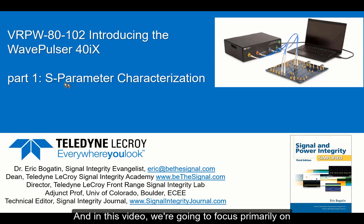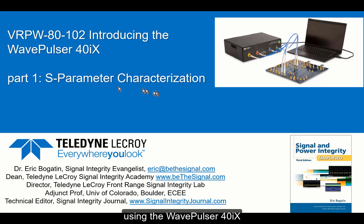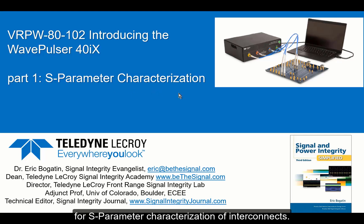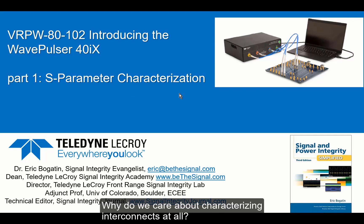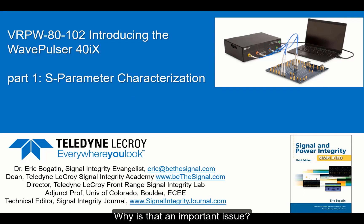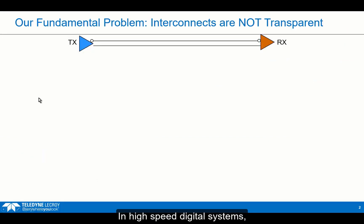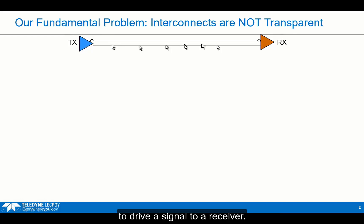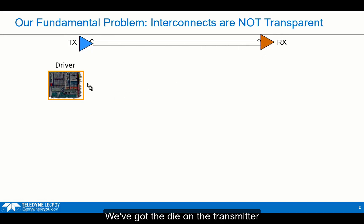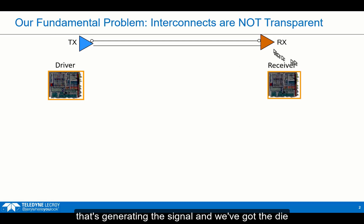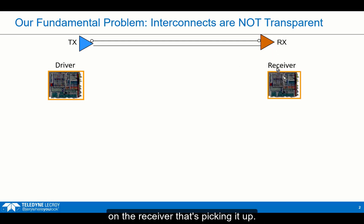In this video, we're going to focus primarily on using the WavePulsar 40IX for S-parameter characterization of interconnects. Why do we care about characterizing interconnects at all? Why is that an important issue? In high-speed digital systems, we generally have a transmitter that's trying to drive a signal to a receiver. We've got the die on the transmitter that's generating the signal, and we've got the die on the receiver that's picking it up.